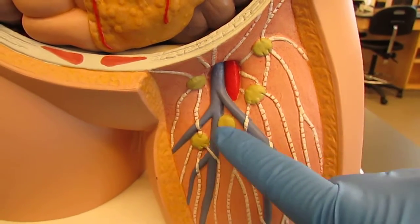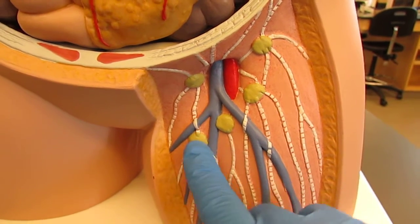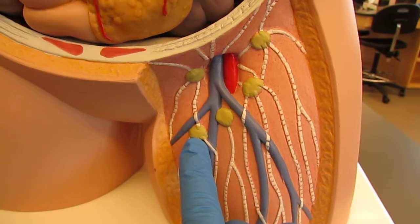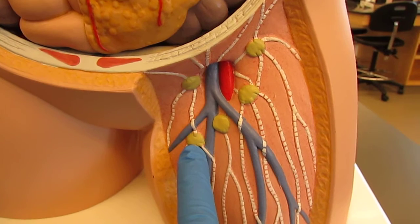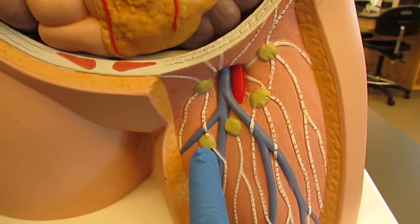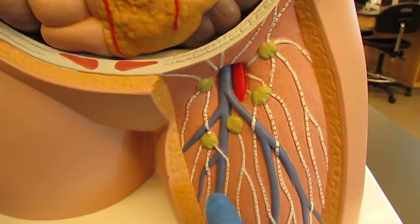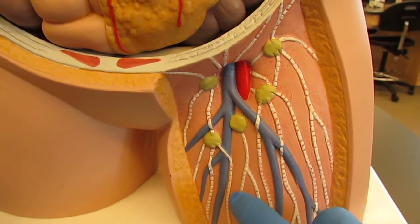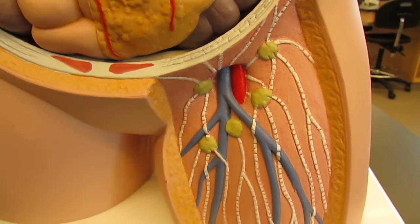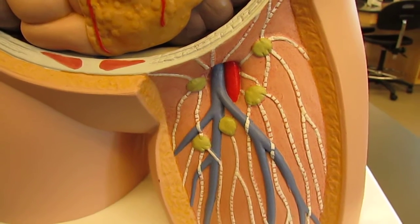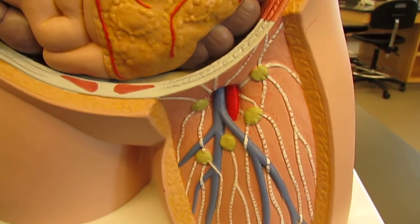These little green dots here represent lymph nodes. These are populated with immune cells, with your T and B lymphocytes, and those lymphocytes are going to patrol that fluid, that lymph that is flowing through them, essentially acting like a cotton ball type filter before the lymph returns to the bloodstream.